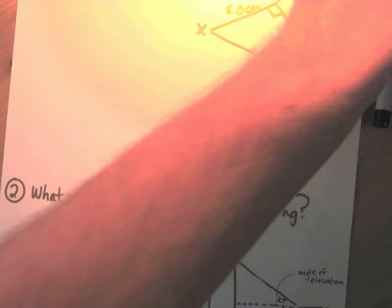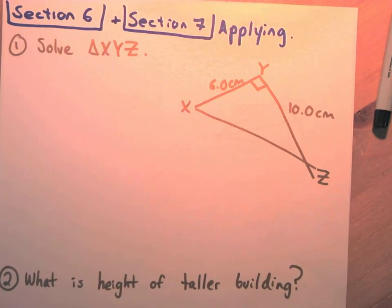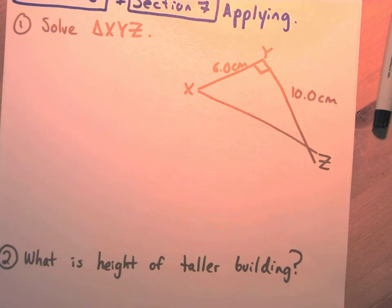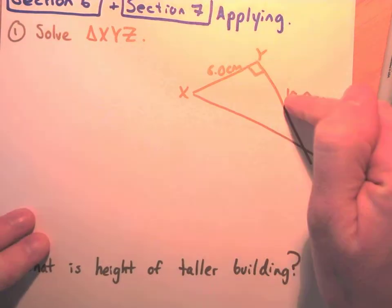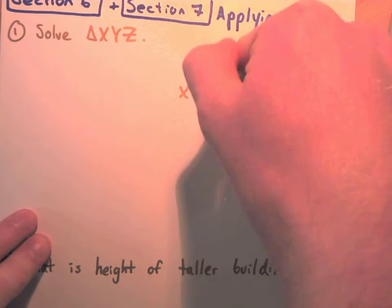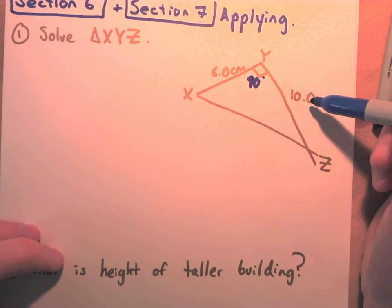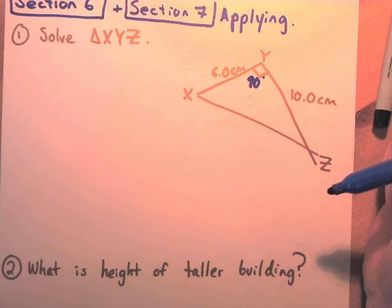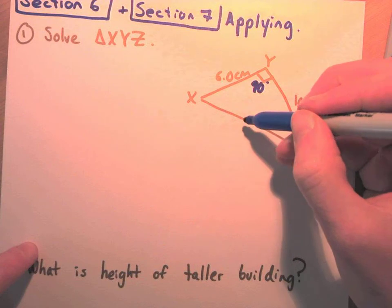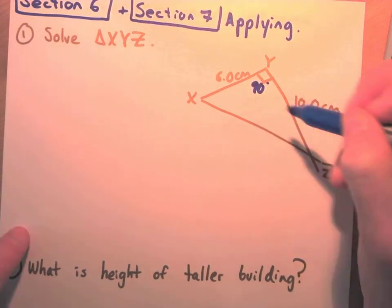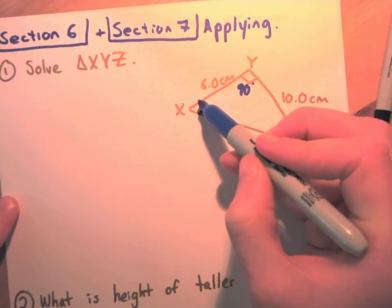Section five is done. For the last two sections we're applying everything in combined questions. Here's one: solve triangle XYZ — find every side length and every angle. We already have two side lengths (10 and 6 centimeters) and one angle (90°). There are many ways; let's use trig. It doesn't matter which angle we find first — let's choose angle X.